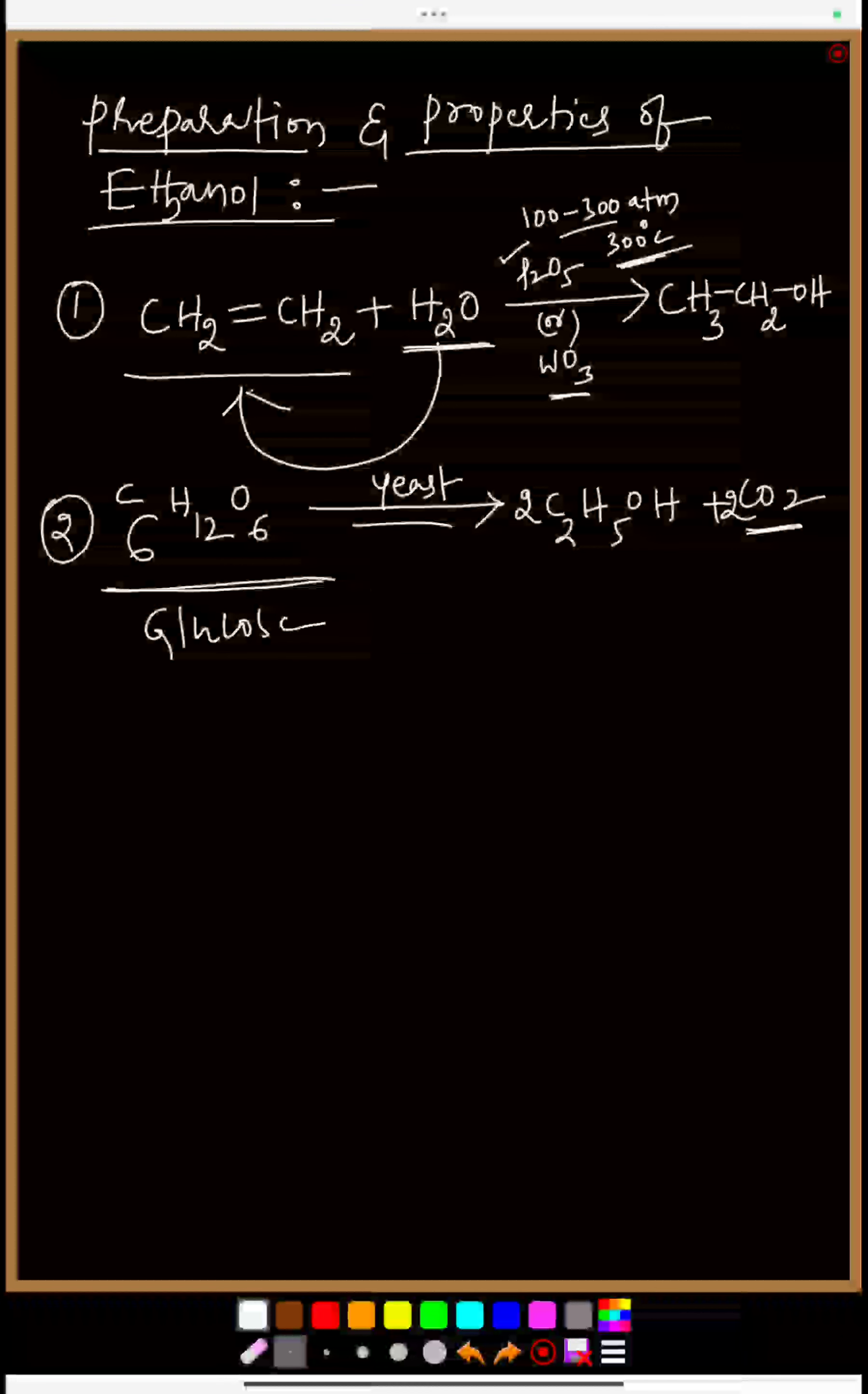If you observe the properties, physical properties of ethyl alcohol: it is a colorless liquid which is having a sweet smell and its boiling point is nearly 78 degrees Celsius.